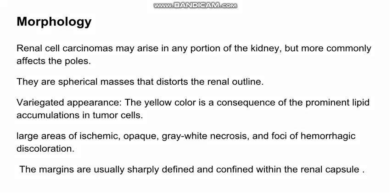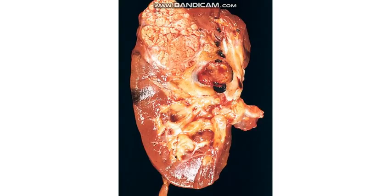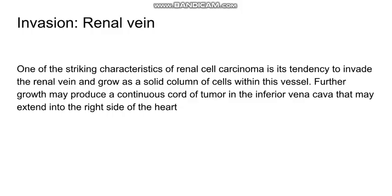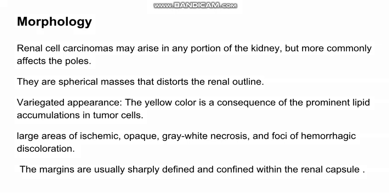Going to the morphology — firstly the gross morphology. RCC is known to affect the poles of the kidney; here we can see it is affecting the upper pole. It is mostly spherical in shape and distorts the shape of the kidney, though it is limited to the renal capsule mostly. It has a special appearance known as variegated appearance, meaning there are variations in colour. It has a yellow colour inside as a consequence of lipid accumulation in the tumour cells, and there are large areas of necrosis, ischemia, and haemorrhagic discolouration.